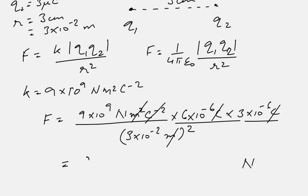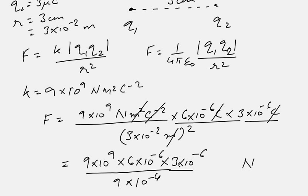Now simply perform the calculation: 9 × 10⁹ times 6 × 10⁻⁶ times 3 × 10⁻⁶, divided by square of 3, which is 9, and square of 10⁻² is 10⁻⁴.